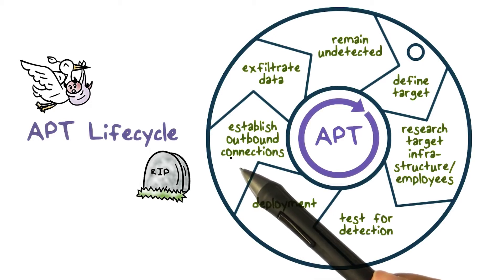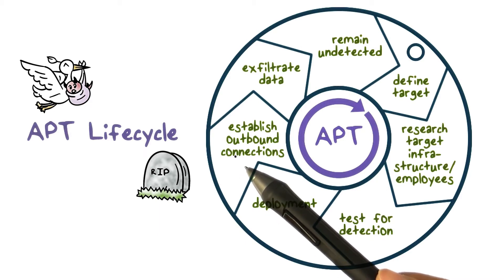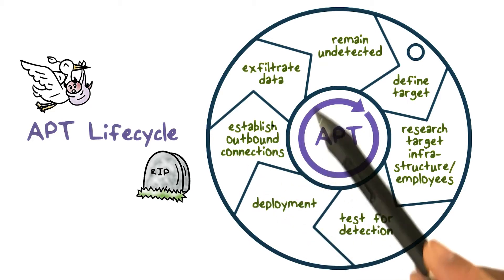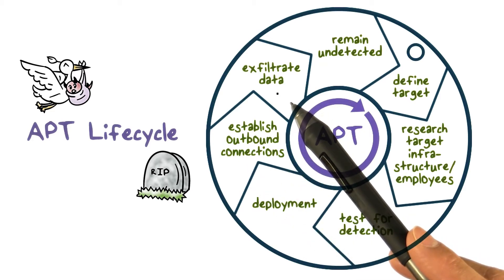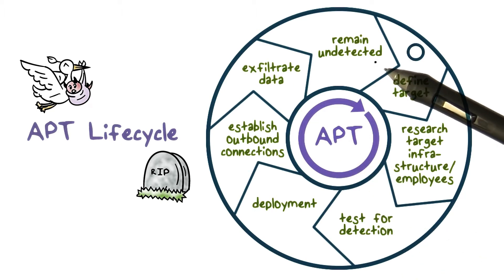The APT can then communicate back to the attacker — for example, it can accept new malware updates, receive commands, etc. It can now exfiltrate valuable data such as the design of a new airplane. The APT will try not to raise any suspicion so that it can go undetected.